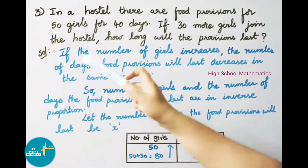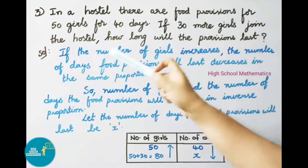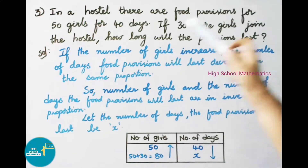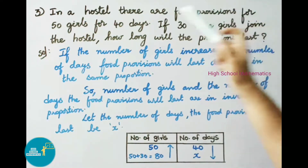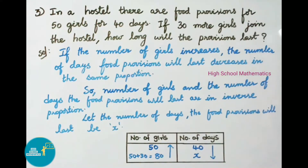See now question number 3. In a hostel there are food provisions for 50 girls for 40 days. If 30 more girls join the hostel, how long will the provisions last? If 30 more girls join, that means 50 plus 30 equals 80 girls in the hostel — how long will the provisions last?